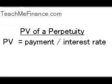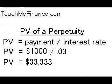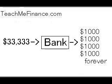So let's fill in the equation. The present value equals the payment, $1,000, divided by the interest rate, 3% or 0.03. You just take out your calculator and divide $1,000 by 0.03, and you get the answer of $33,333. So you put $33,333 into the bank, and at 3% every year, that earns about $1,000 in interest, and then that $1,000 becomes the scholarship.